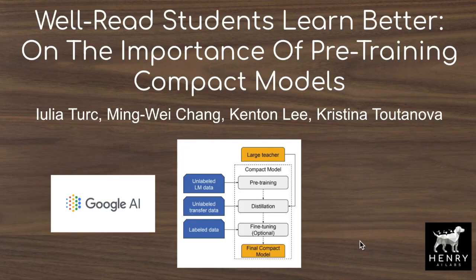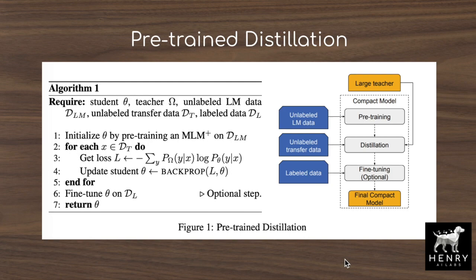This video explains 'Well-Read Students Learn Better' on the importance of pre-training compact models, developed by researchers at Google AI. This paper presents the algorithm pre-trained distillation. The title describes a novel way of looking at the pre-trained and fine-tuned pipeline with respect to these off-the-shelf, open-source pre-trained models. We have access to models like BERT-base, BERT-large, RoBERTa, T5, and the GPT models, all easily accessible through the Hugging Face API.